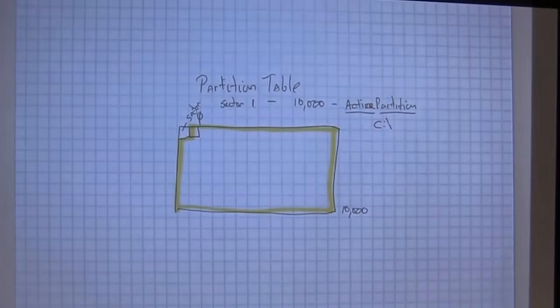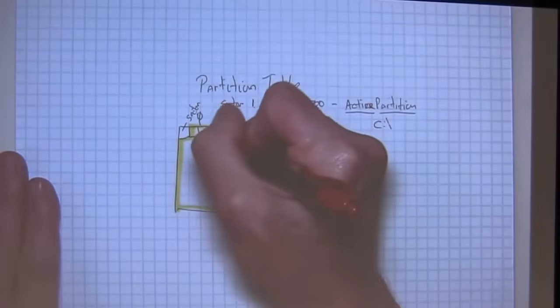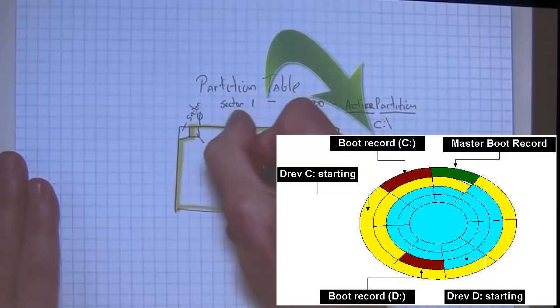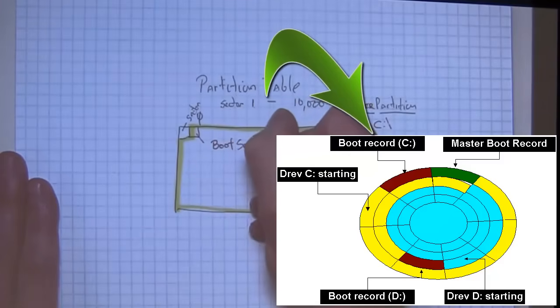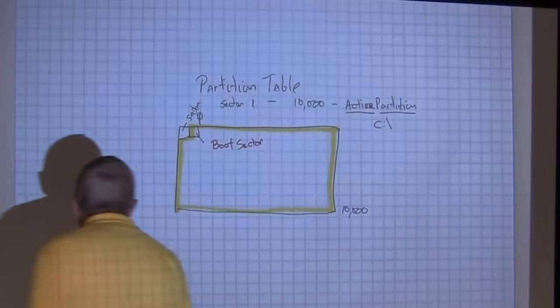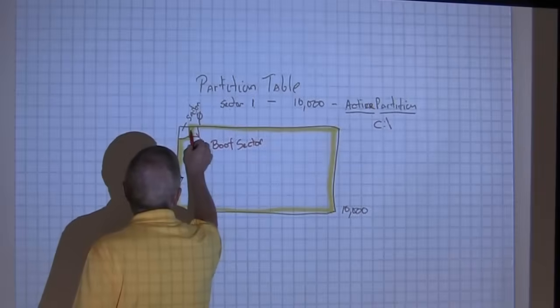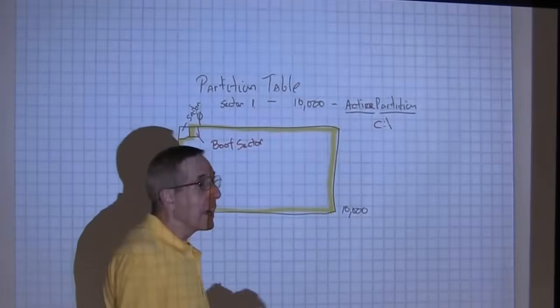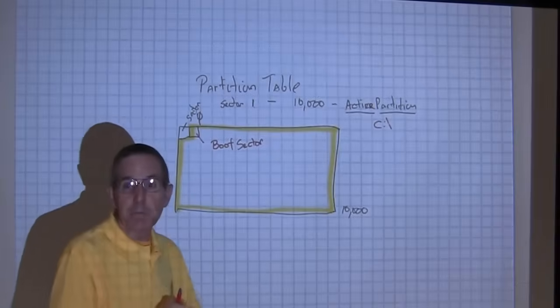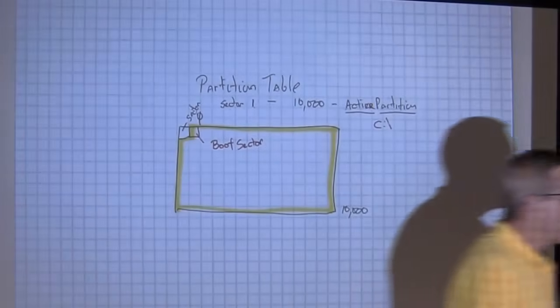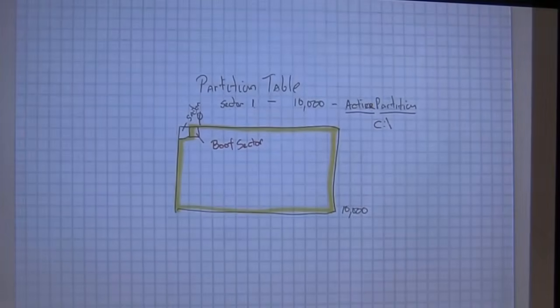The first sector in the active partition is called the boot sector. This is very important. This is where viruses used to love to go. So if I was a virus writer and I wanted to infect you every time you boot it up, I would take what was in here, override it, put my slick little code in there, and I would add my virus to the operating system every time you boot it up. These are called boot sector viruses.